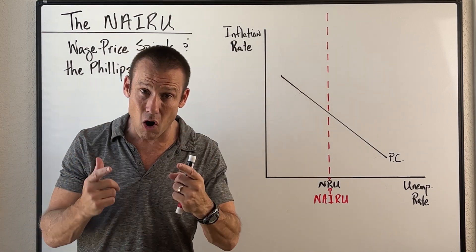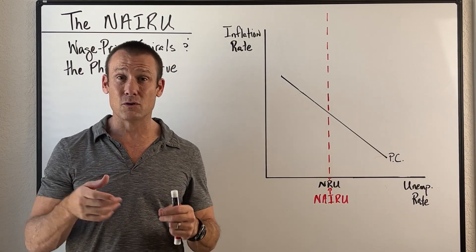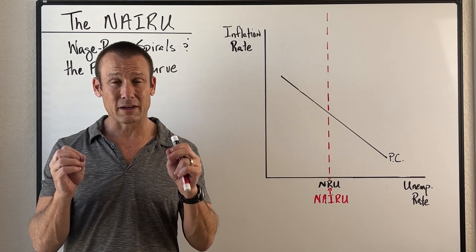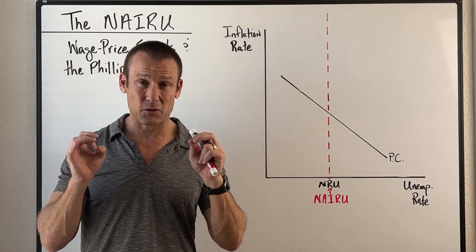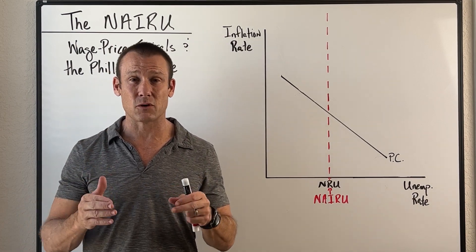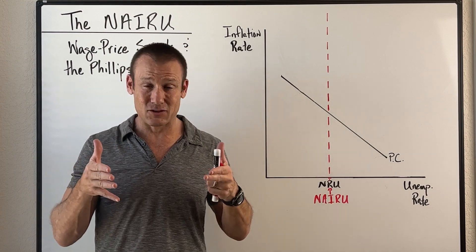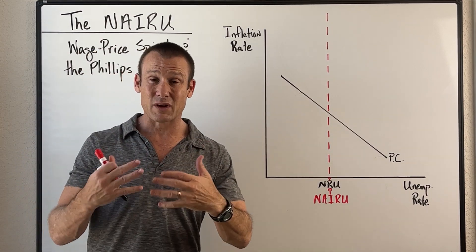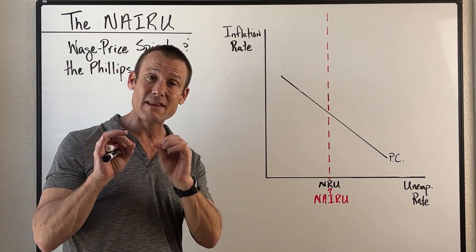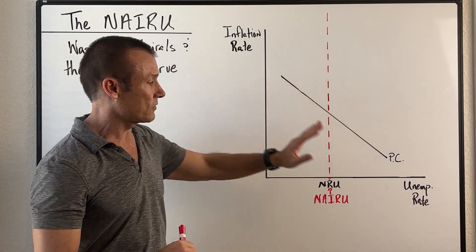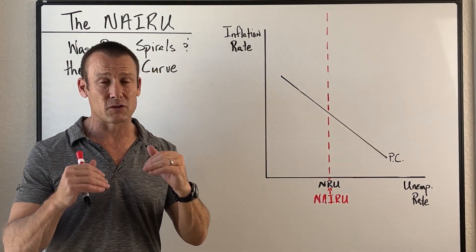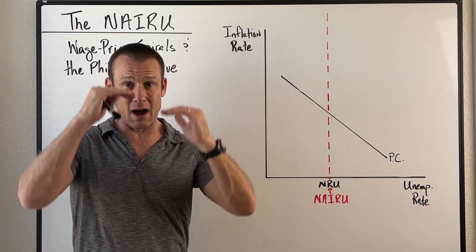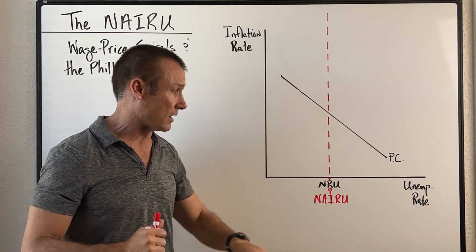We're going to be doing it all with a model, and the model we're going to use is the Phillips curve model. We are looking at current events through an academic perspective — that's what I'm trying to do in these videos. The Phillips curve model depicts an inverse relationship between the inflation rate and the unemployment rate. An inverse relationship means when one goes up, the other one goes down.